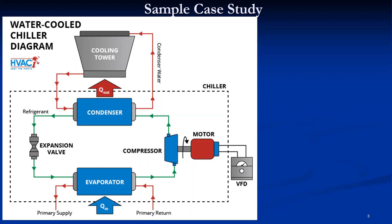The condenser UA value — the overall heat transfer coefficient times surface area — is given. This value comes with the condenser; for new or old condensers, the fouling factor can also be estimated. In this problem statement, the UA value is given as 20,700 W/K.